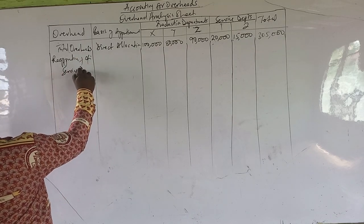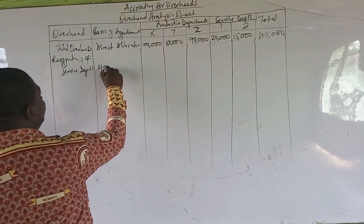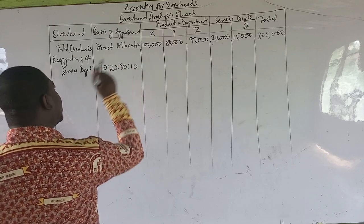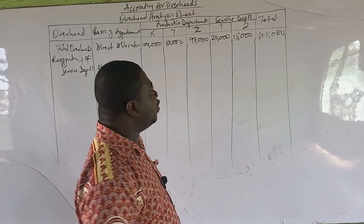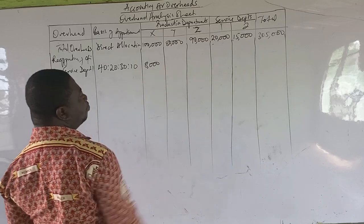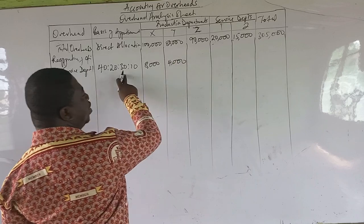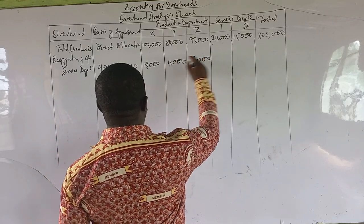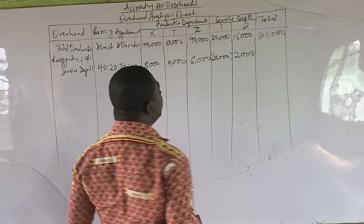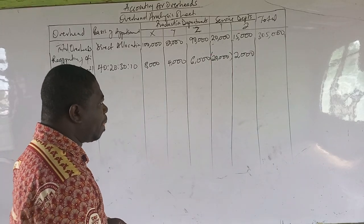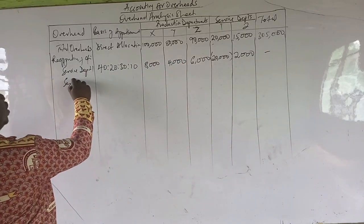We are reapportioning service department one. The ratio according to the question is 40:20:30:10. So 40% of 20,000 is 8,000. Then 20% of 20,000 is 4,000. 30% of 20,000 is 6,000. And 10% of 20,000 is 2,000. We put the 20,000 itself beneath the figure in brackets — of course it does not affect the totals. Then we come to reapportionment of service department two.